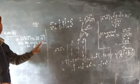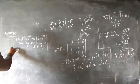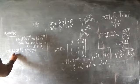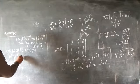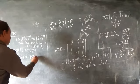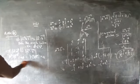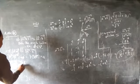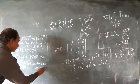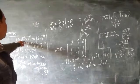Since |a × b| = |a · b|, we have |a||b|sin θ = |a||b|cos θ. Cancelling |a||b| from both sides gives sin θ / cos θ = 1, which implies tan θ = 1, therefore θ = π/4.